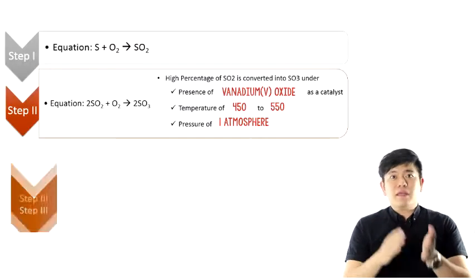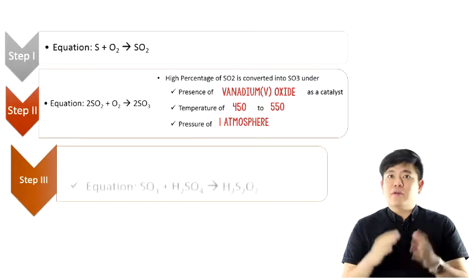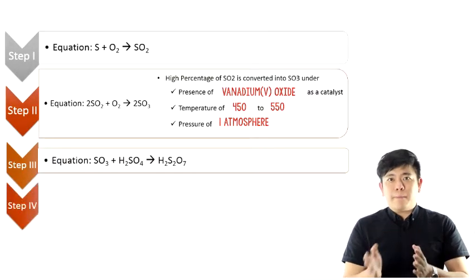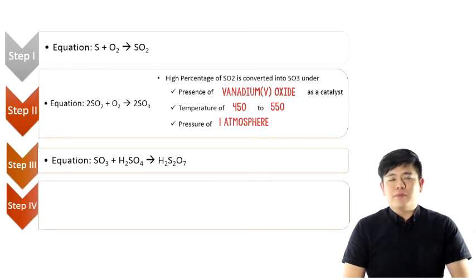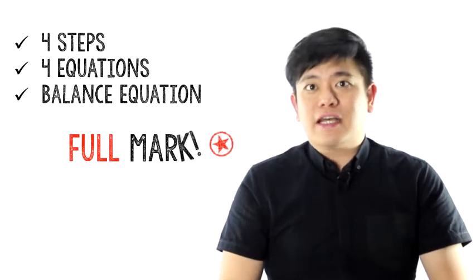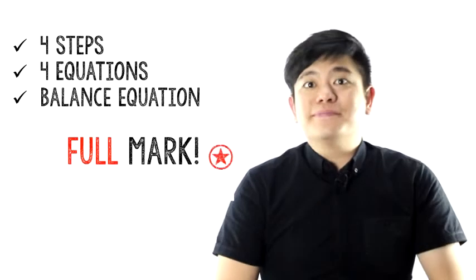Okay, continue on. Step three, we take the Sulfur Trioxide, dissolve it in Sulfuric Acid, you get Oleum. And then step four, Oleum dissolved in water, you get Sulfuric Acid. So remember these four steps and four equations. Make sure you balance the equation in the exam, and you will get full marks. Thank you.